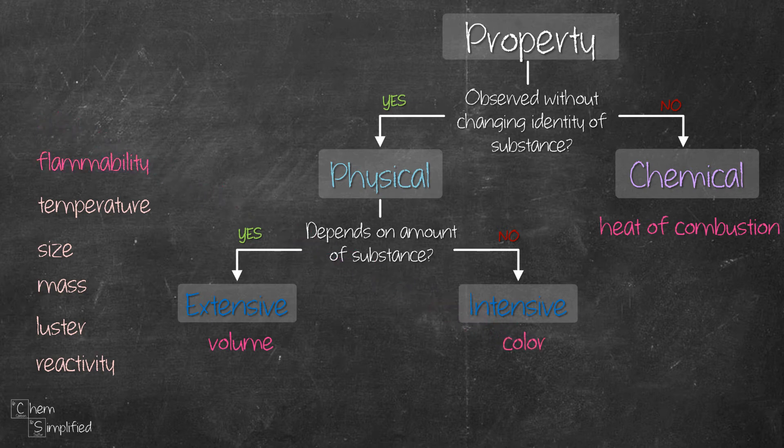Flammability is how easily something can catch on fire. In order for us to observe that, the substance will become something else when it catches on fire. That makes it a chemical property, since its chemical identity will change.